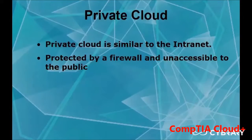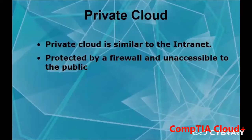The private cloud is similar to the internet — it is basically an internal network that allows users to do what they need. For instance, Google is all around the world, but they still have a private cloud. People from the Middle East are able to access information hosted in Washington State and do what they need inside the whole cloud. But as a user, you're still not able to access that information if you're not part of Google's cloud.